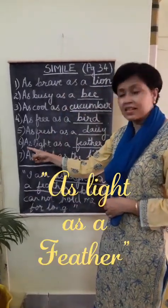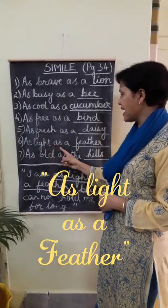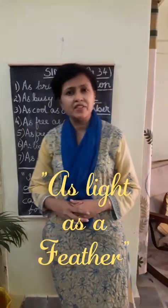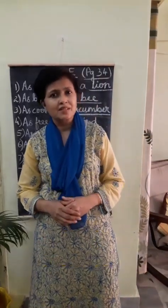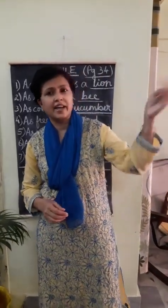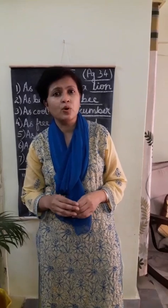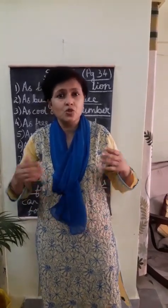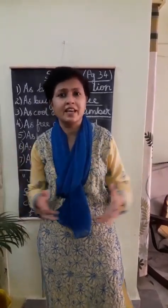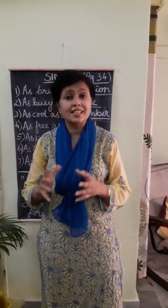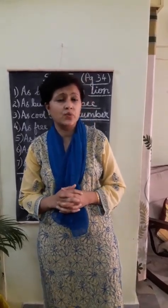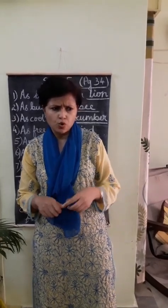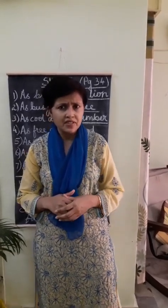Number 6: as light as a feather. You must have seen feathers — sometimes a feather is flying and when the wind is blowing, it is very difficult for the feather to settle down because it is so light, it keeps flying here and there. So that is why we say as light as a feather. If some boy is very thin, we will say: you are as light as a feather.